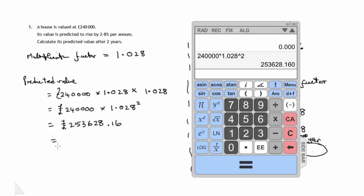We get £253,628.16. Now that's a bit silly being accurate to the nearest pence after two years. It's just a rough prediction. We were originally given £240,000, and if we assume that's to the nearest thousand, then approximately this to the nearest thousand, chopping a six off, three would go up to four.